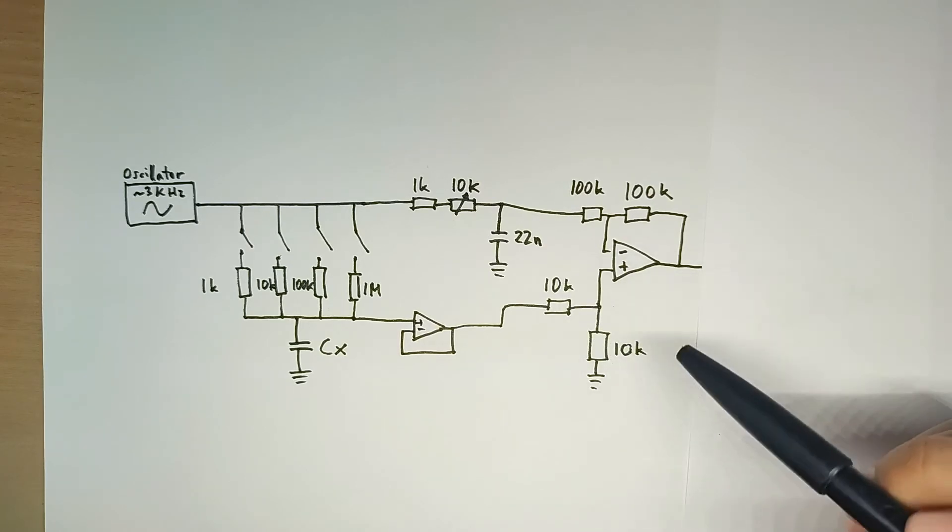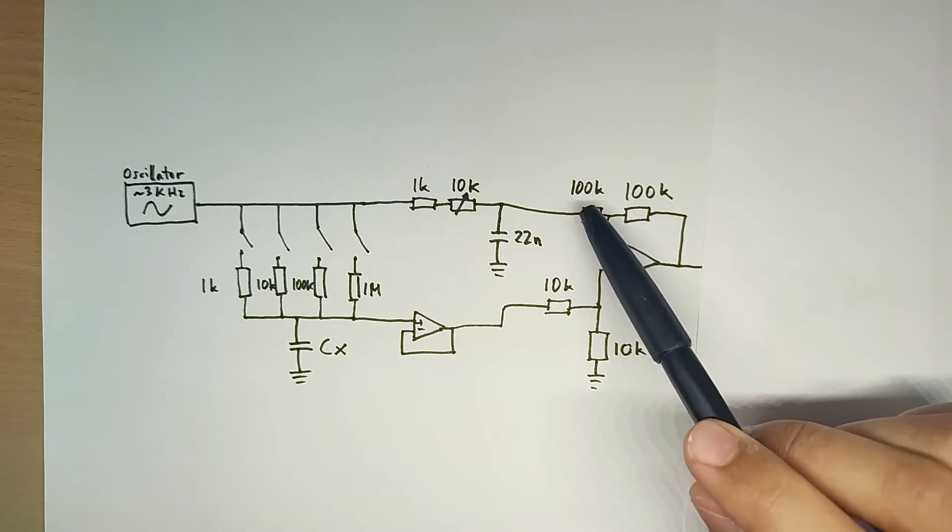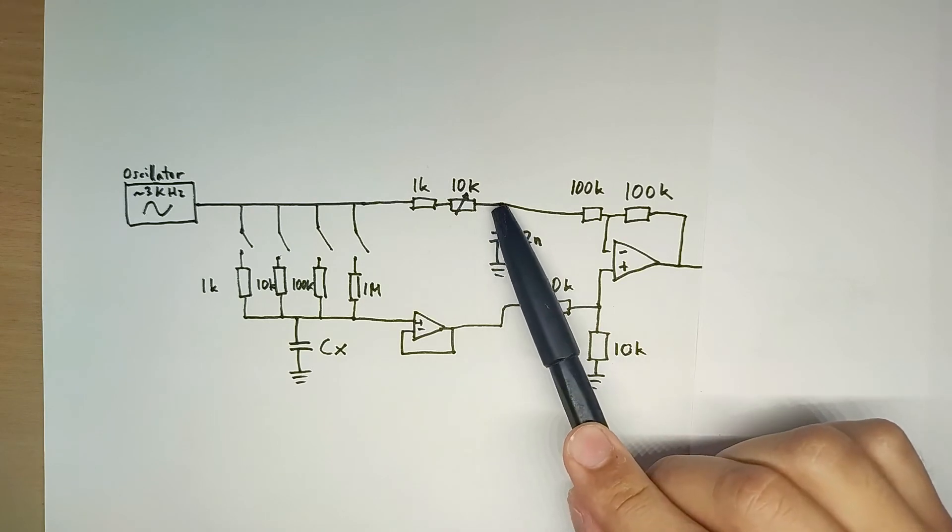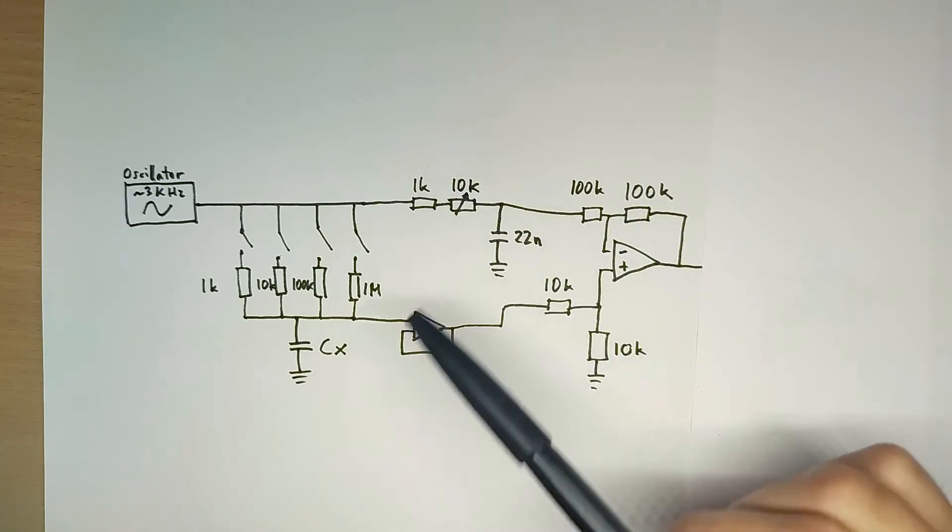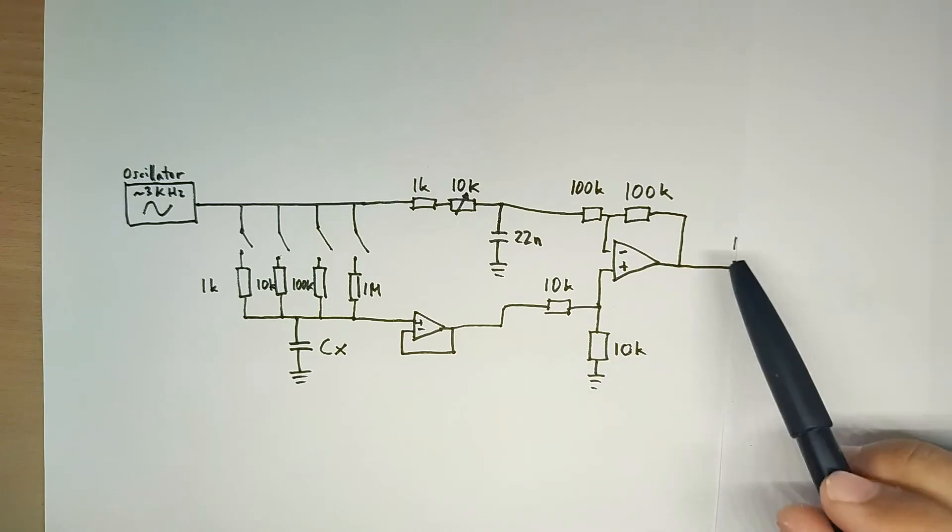Now here you can use any two resistors with the same value, it doesn't really matter. I mean obviously keep it over a certain minimum value, but here we need at least 100K to not load the output of this filter here, because we should have used another buffer, but then I needed five op amps and we'd have to add another IC.